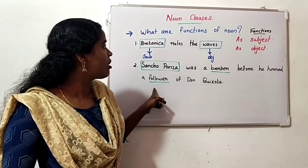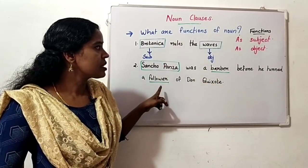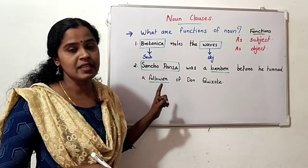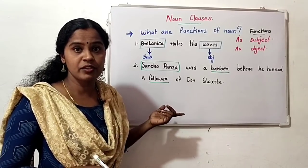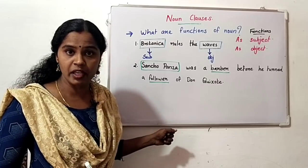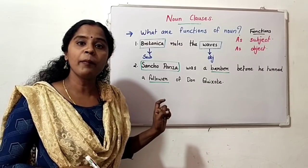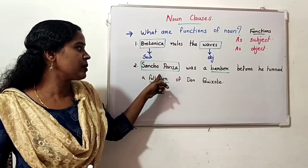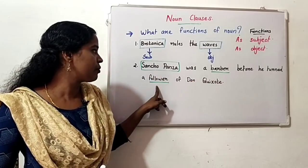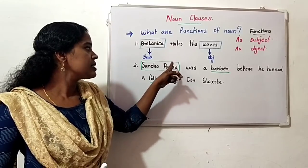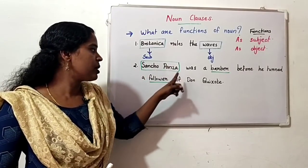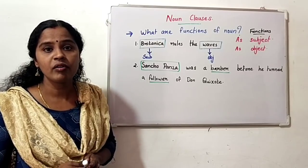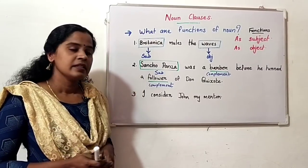So another function of noun is as a complement for the subject. If it complements the subject, it can complement the object too. So a noun can act as subject complement or object complement.